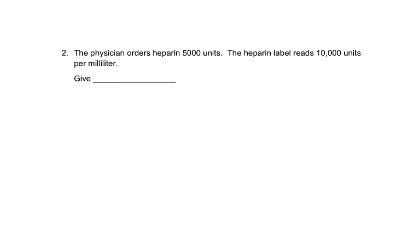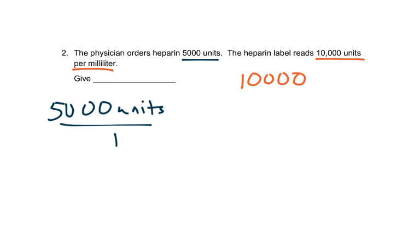Here a physician orders heparin 5,000 units. So we're going to start with 5,000 units over 1. The heparin label reads that there are 10,000 units per milliliter. So that's telling us that we have 10,000 units equal to 1 milliliter.